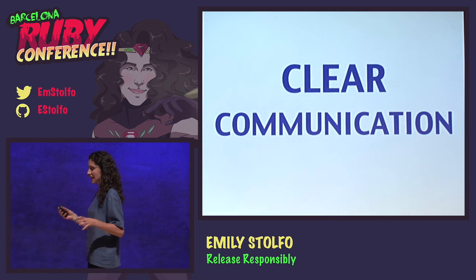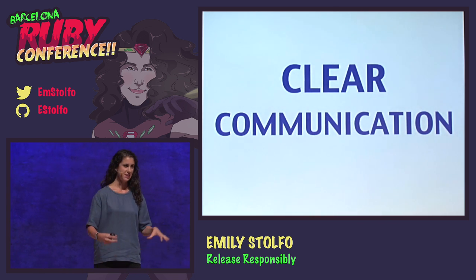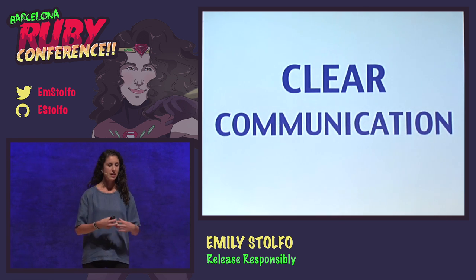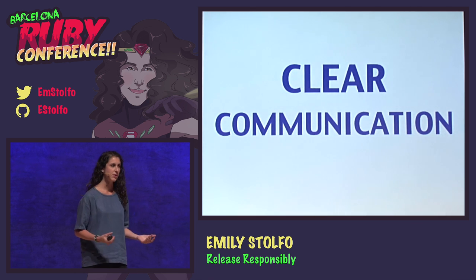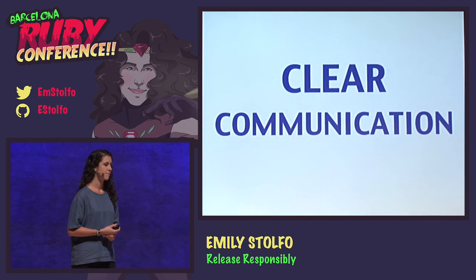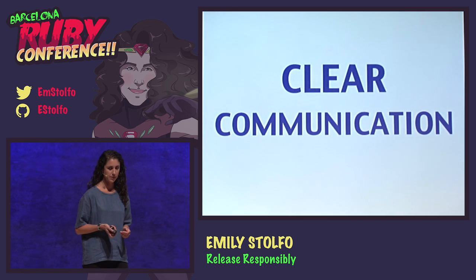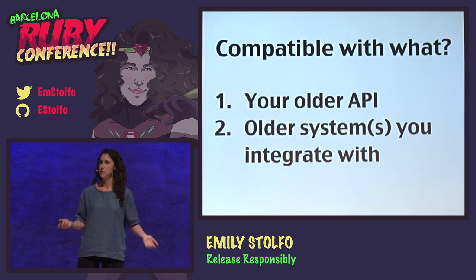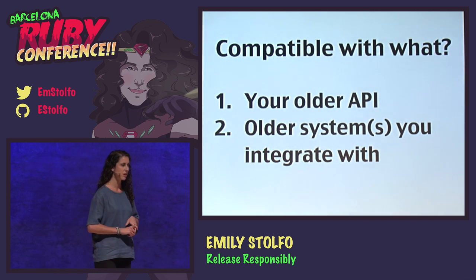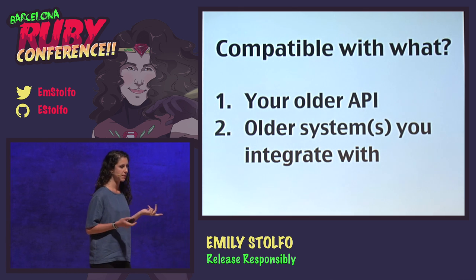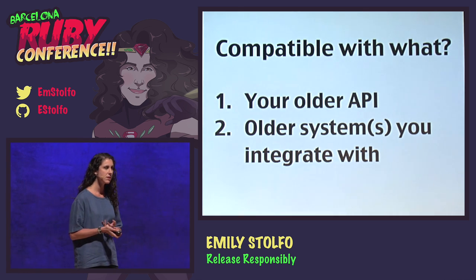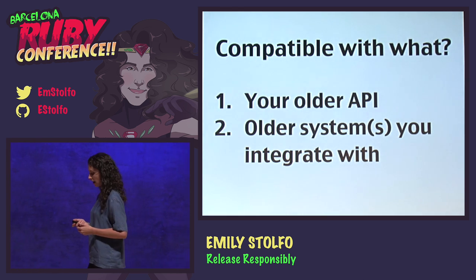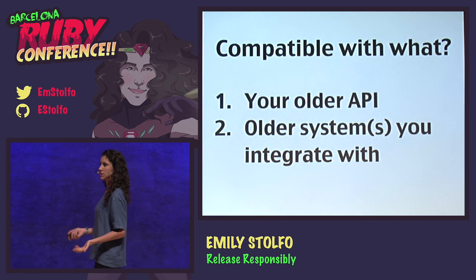So: clear communication. This is really the meat of the talk — the most important aspect of maintaining backwards compatibility. There are a number of channels you can communicate through, a number of people you have to communicate with, and a number of ways you can communicate. Starting out: when you talk about backwards compatibility, what are you compatible with? Are you compatible with old versions of your API? With the systems you depend on? With different versions of the language?